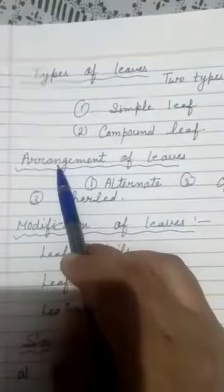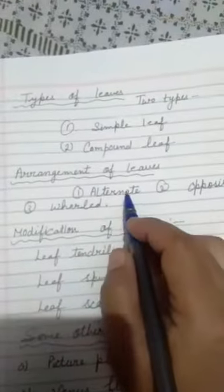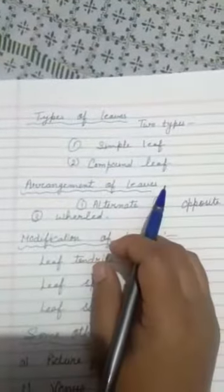Now the next part is arrangement of leaves. We know that the main function of leaves is to carry out photosynthesis. Therefore, they are arranged on the stem in such a manner, so as to receive the maximum amount of sunlight and air. This arrangement of leaves on the stem is called phyllotaxy. Let's learn about the different types of leaf arrangement.